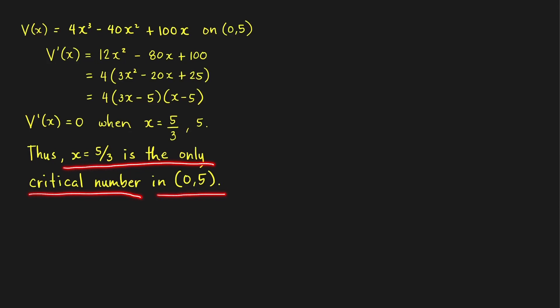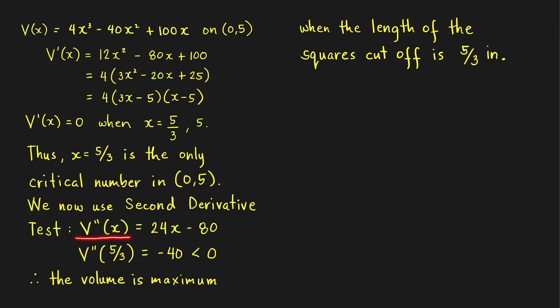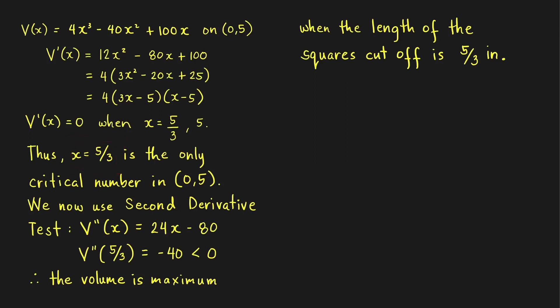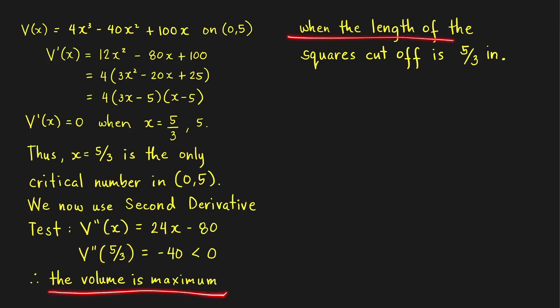Now let's apply the second derivative test to determine whether this critical number gives a maximum, minimum, or neither. Computing the second derivative from the factored expression, we get V''(x) = 24x minus 80. Evaluating at x = 5/3: V''(5/3) = 24 × (5/3) minus 80 = 40 minus 80 = negative 40, which is less than 0. Therefore we have a maximum at x = 5/3, and conclude that the volume is maximum when the side length of the cut squares is 5/3 inches.